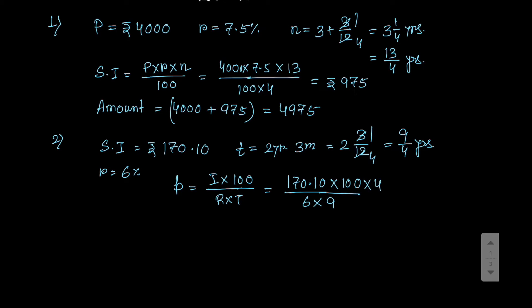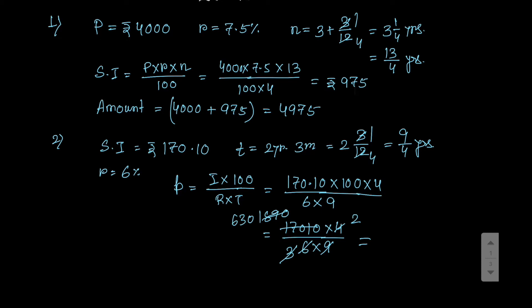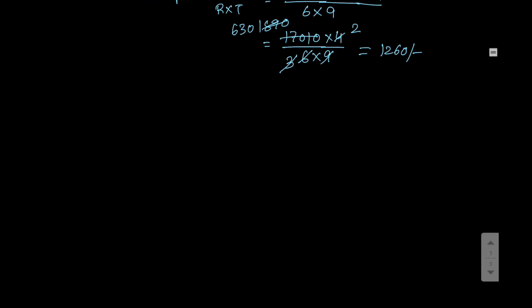So interest is 170.10, multiplied by 100, divided by R which is 6, and T which is 9 by 4 — so 4 comes up. That gives 170.10 into 4 divided by 6 into 9. Simplifying: 17010 divided by 9 gives 1890, divided by 3 gives 630, then 630 into 2 equals 1260. So 1260 is your answer.